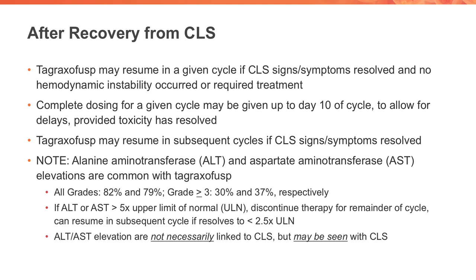Importantly, alanine aminotransferase (ALT) and aspartate aminotransferase (AST) liver function elevations are common with tagraxafusp as well. 82% and 79% of patients had ALT or AST elevations of all grades, and 30% and 37% were grade 3 or higher. If ALT or AST are greater than five times the upper limit of normal, tagraxafusp should be discontinued for the remainder of the cycle and can resume in subsequent cycles if it resolves to less than or equal to 2.5 times the upper limit of normal. ALT and AST elevations are not necessarily linked to capillary leak syndrome, but may be seen with it.